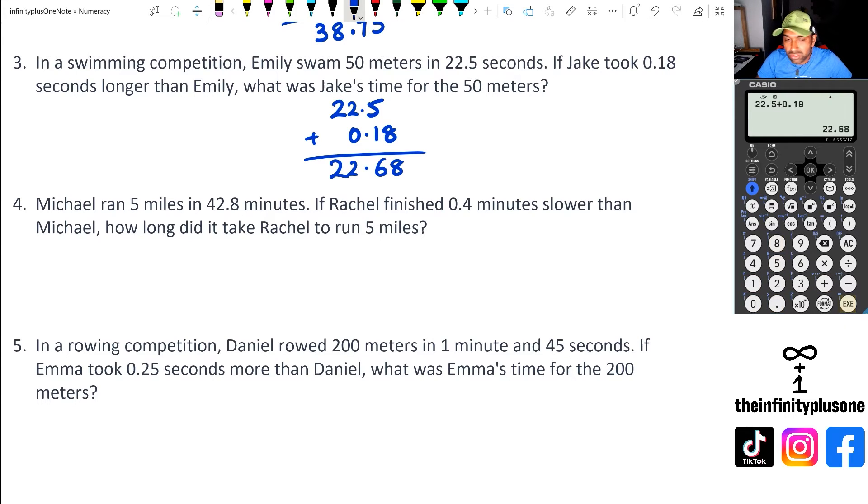Looking at question four, Michael ran 5 miles in 42.8 minutes, and Rachel finished 0.4 minutes slower. So that means we've got to add 0.4 minutes to figure out Rachel's time. So that's going to be 0.4, and we're going to add those two numbers together.